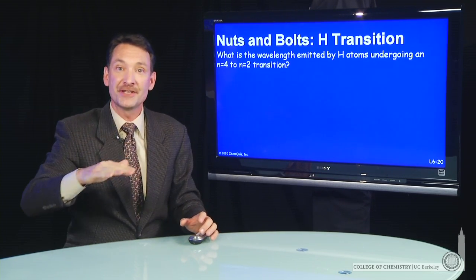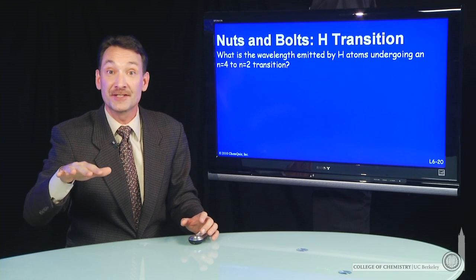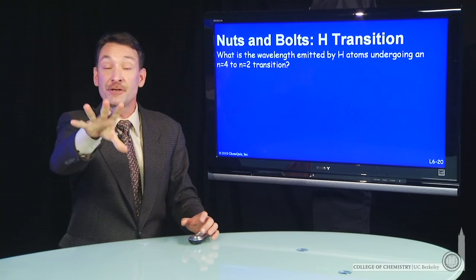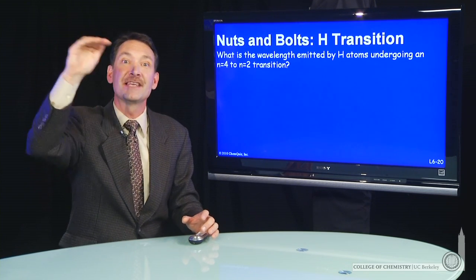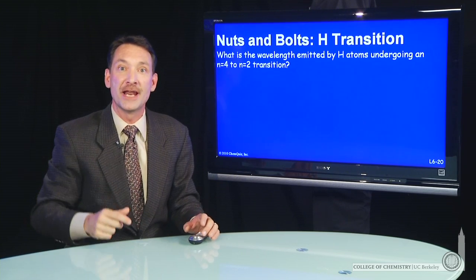and the electron drops down to n equals 2, a not so excited state, a photon of light will be emitted, corresponding to the energy difference between n equals 4 and n equals 2.